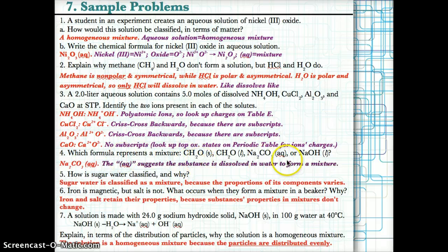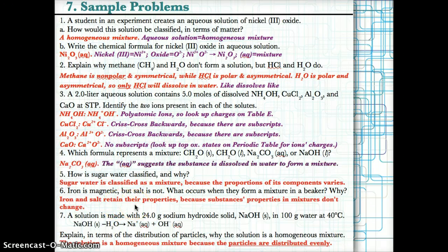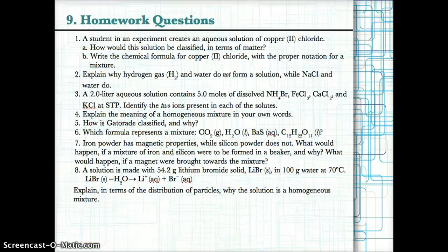For problem 4: NH₂CO₃(aq) is a mixture because the (aq) indicates the substance is dissolved in water to form a mixture. Sugar water is a mixture because the proportions of its components vary — the amounts of sugar and water are not fixed but can change, and it will still be sugar water. Iron is magnetic but salt is not; if they form a mixture, iron and salt keep their individual properties because properties in mixtures don't change. Please complete the remaining questions on your own for the next lesson.